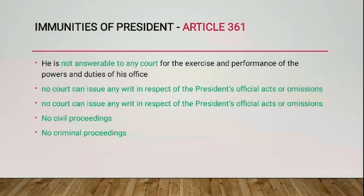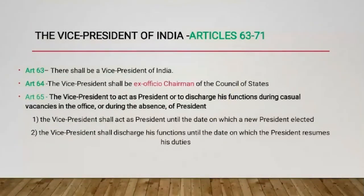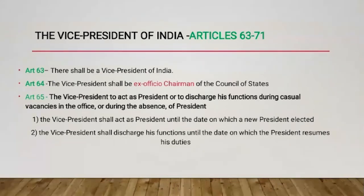Now comes the Vice President of India under Articles 63 to 71 of the Constitution. Article 63 states there shall be a Vice President of India. The Vice President shall be the ex-officio Chairman of the Council of States. Under Article 65 clause 1, the Vice President shall act as President until the date on which a new President is elected. When the President is unable to discharge his functions due to illness or any other cause, the Vice President shall discharge his functions until the President resumes his duties.